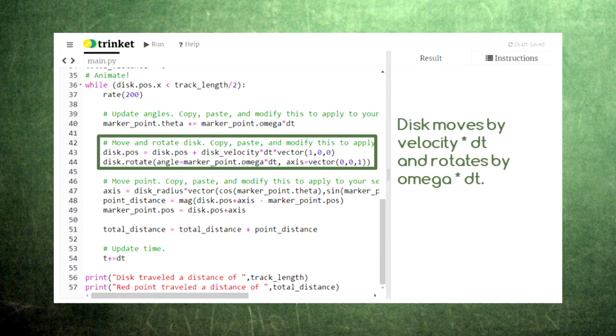Next, we set up an animation loop that will run until the center of the disc reaches the end of the track. We move the disc forward according to velocity multiplied by the time step, and we rotate the disc by an angle equal to the rotational velocity times the time step.